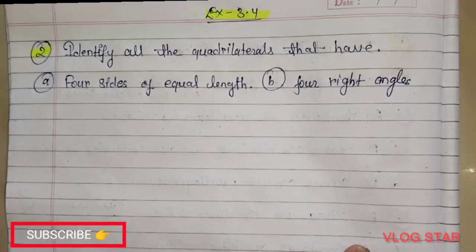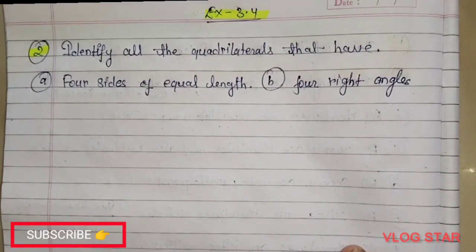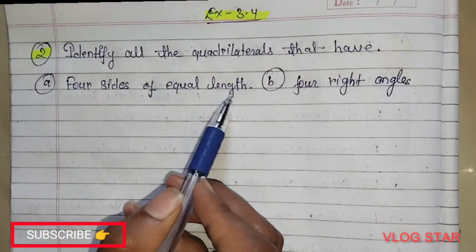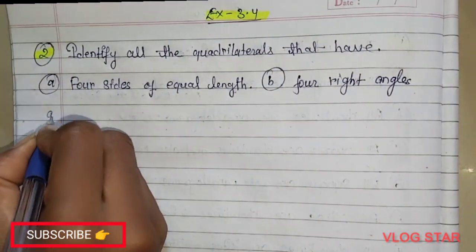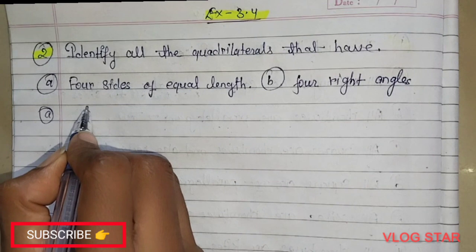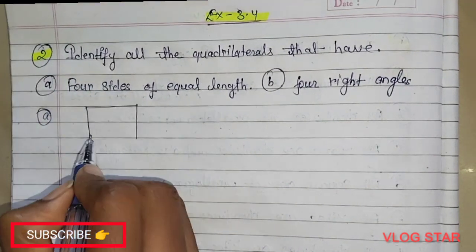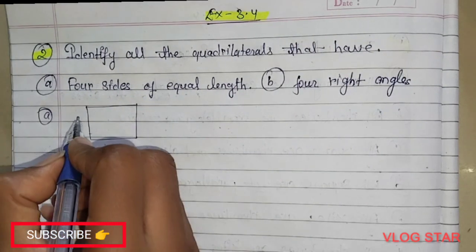Hello, let's discuss Class 8 Exercise 3.4 Question Number 2. The question is: identify all the quadrilaterals that have (a) four sides of equal length. As we know, in a square all...